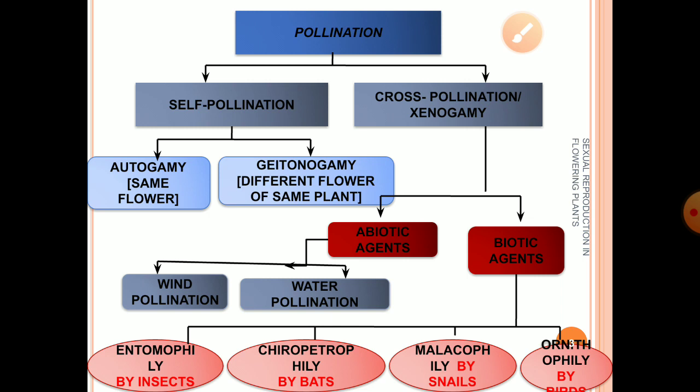Moving on to cross-pollination — another term for it is xenogamy, which starts with X, just like 'cross.' In xenogamy, transfer of pollen grains occurs from the anther to the stigma of a different plant, so pollinating agents are required and genetically the pollen grains are from different plants — they are genetically different. This is the basic difference.